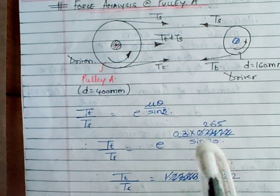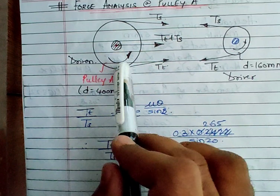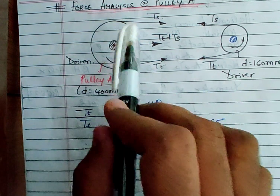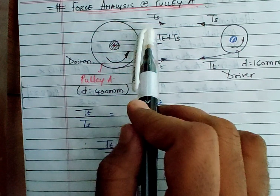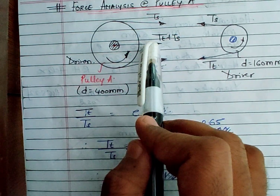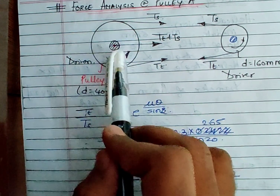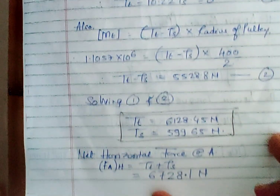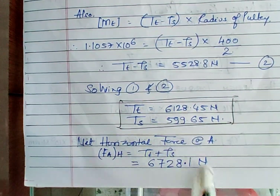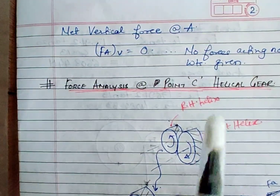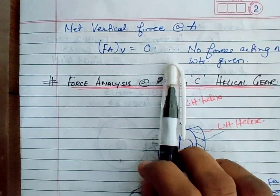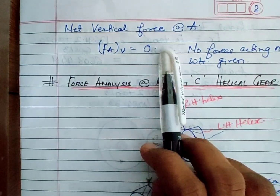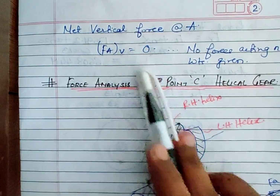When we shift these forces to the center of the shaft, the net force acting there is TT + TS. The couple effects from shifting TT and TS individually cancel each other out, leaving only TT + TS as the net horizontal force on the shaft. This value has been calculated by substituting the solved tension values. Since the weight of the pulley was not mentioned and belt tensions act only horizontally, the net vertical force at point A comes out to be zero.